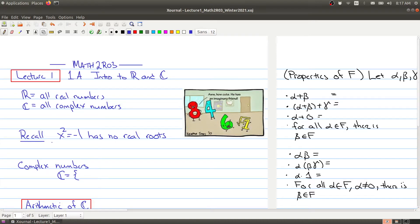So what we do is we introduce a new number i, and we say, well, let i be the solution to this equation. So i is the number with the property that i squared is equal to negative 1.